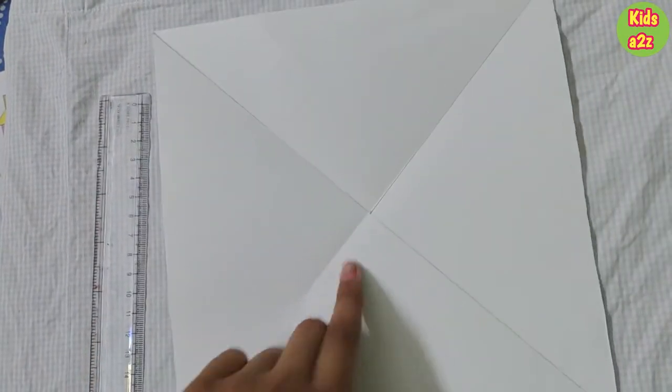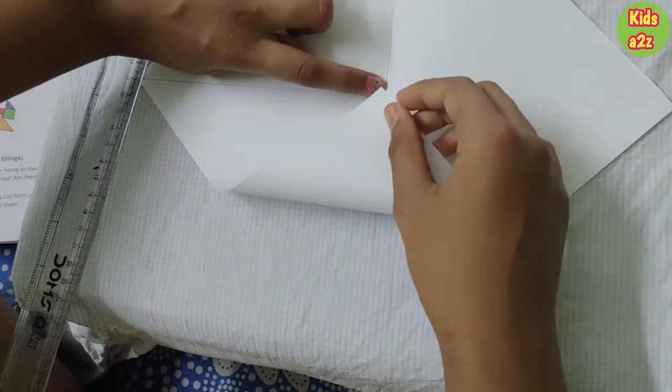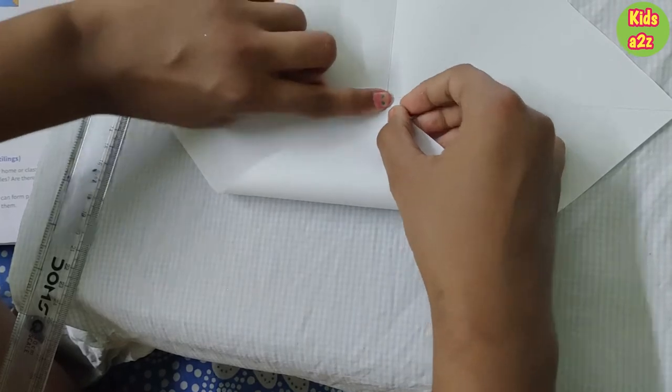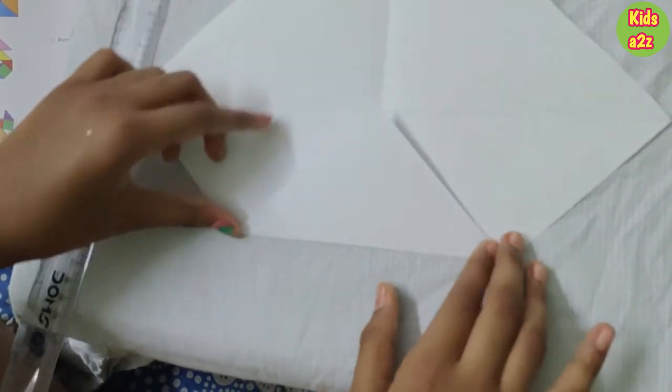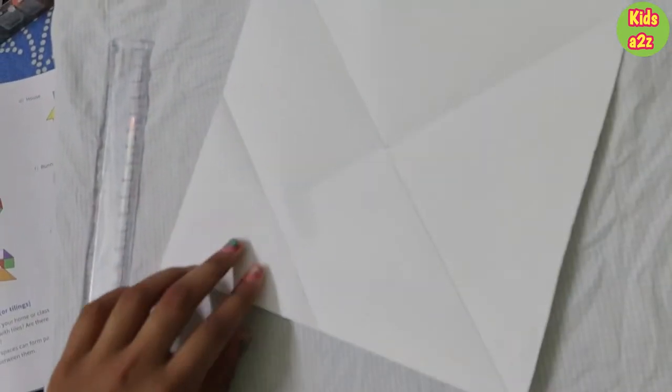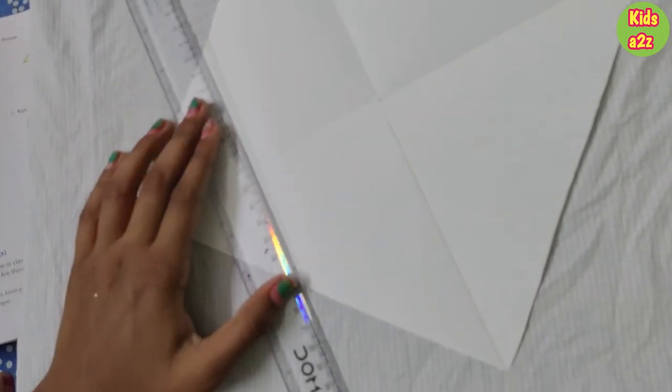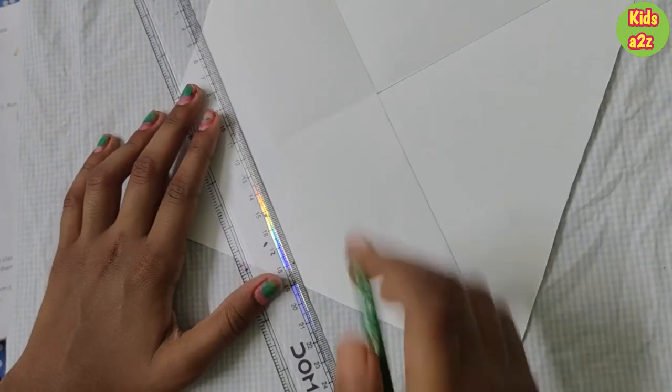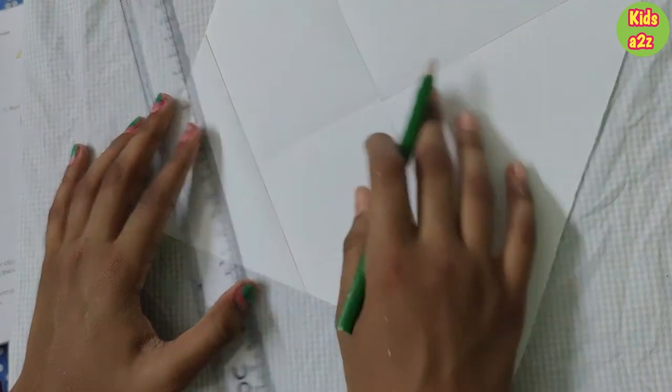But we will not mark on this side. First, we will put this corner to this side and then fold it. Then we will again take the pencil and the ruler and we will mark it, and also this line.